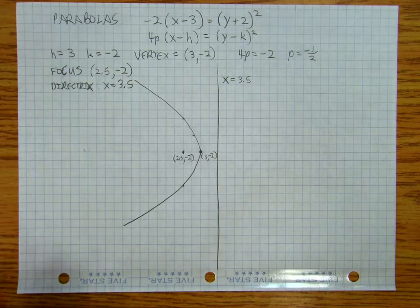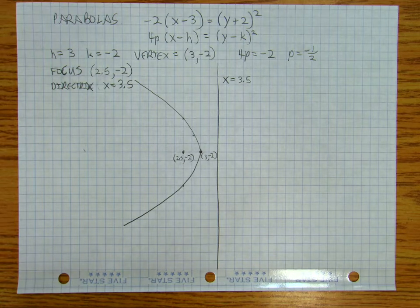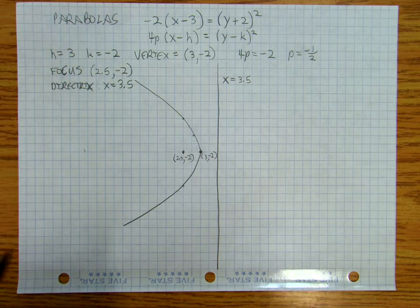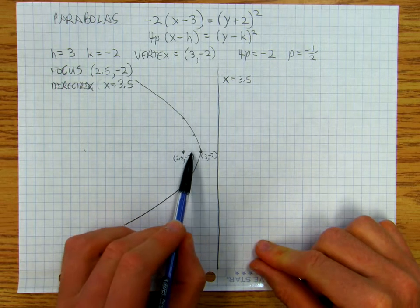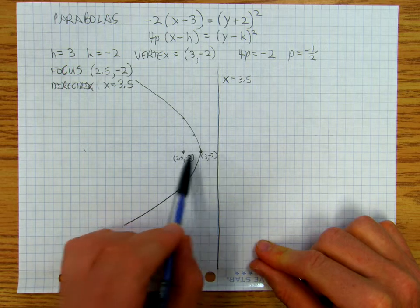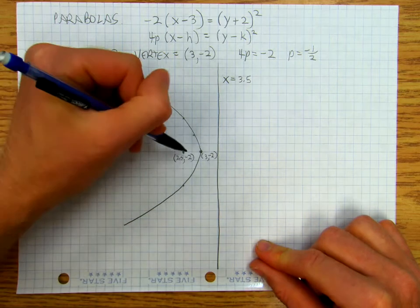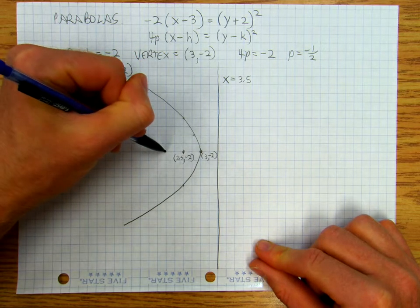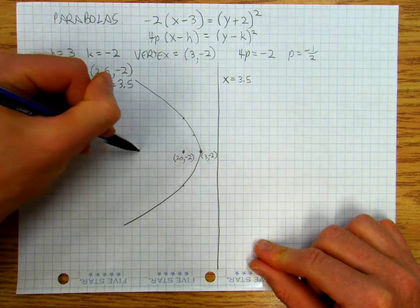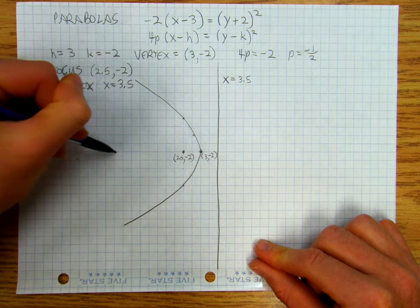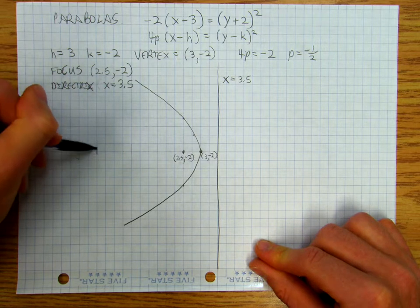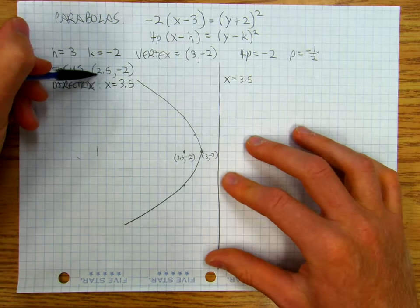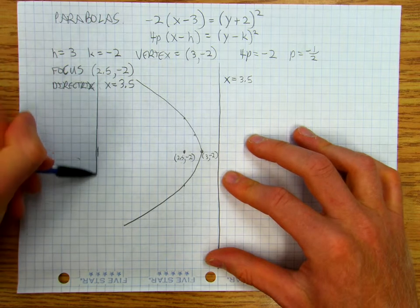And there's my parabola. Now, the last thing that I'm going to do is put in my coordinate axes. I've made each box 1 quarter, so that's 1. So if this is 2.5, that's 2, counting down. There's where my y-axis is going to be.